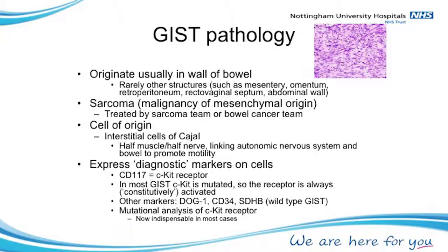A GIST originates in the bowel — from the gullet all the way down to the bottom. It can occur in other structures too. There is the mesentery, the scaffolding that holds the bowel and supplies it with blood. You can get GIST there. The omentum, like an apron covering the bowel, can have GIST originating there. The back of the tummy, called the retroperitoneum, can have GIST. And in females, between the rectum and the vagina, very occasionally you can have a GIST there, which can be quite difficult to manage.